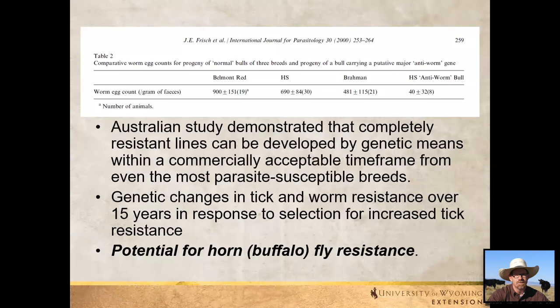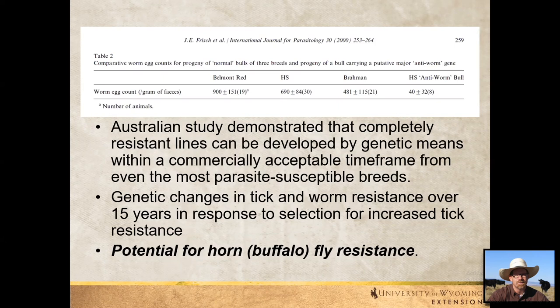There's also international evidence for this. A study from Australia showed that over time they could select for tick and intestinal worm resistance. They were primarily selecting for tick resistance, but the study also reported some potential for horn fly (sometimes called buffalo fly, though same scientific name) resistance. So there's evidence from other countries as well.